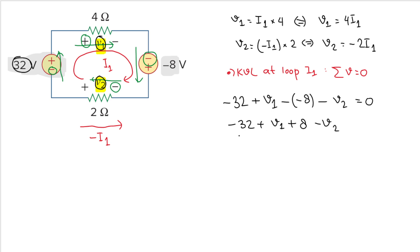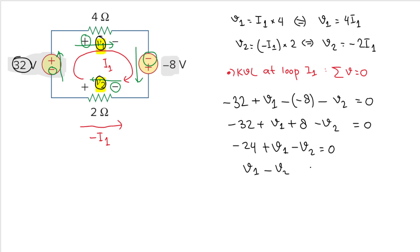The double negative gives us plus 8. So we have minus 32 plus 8, which is minus 24, plus v1 minus v2 equals zero. Therefore v1 minus v2 equals 24.